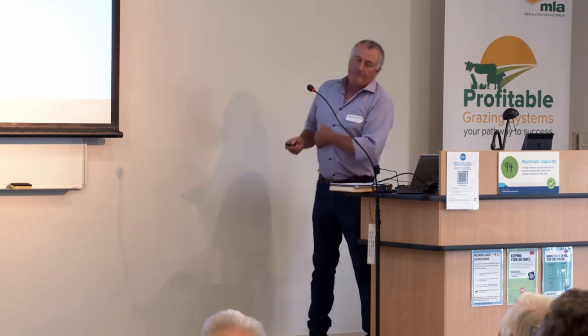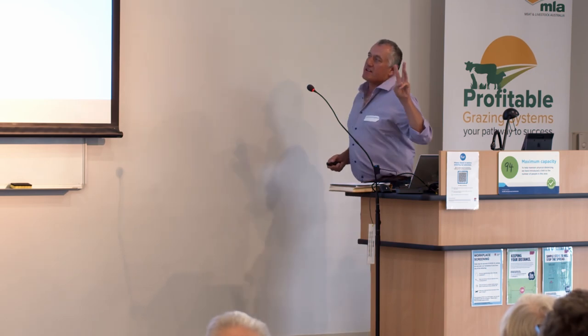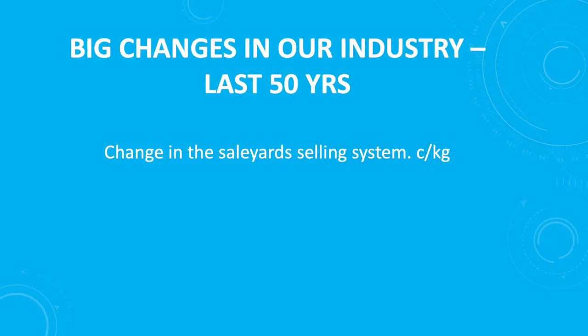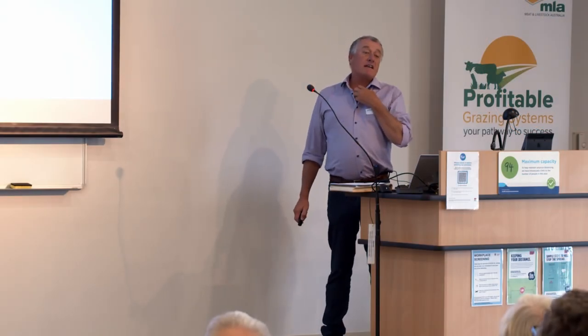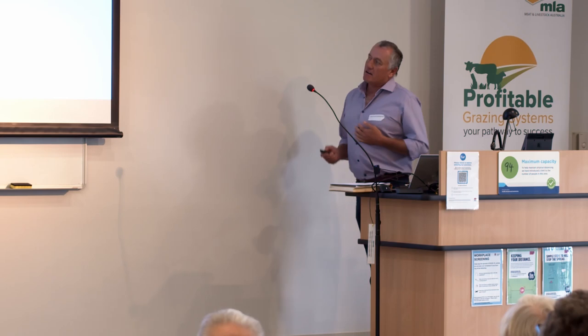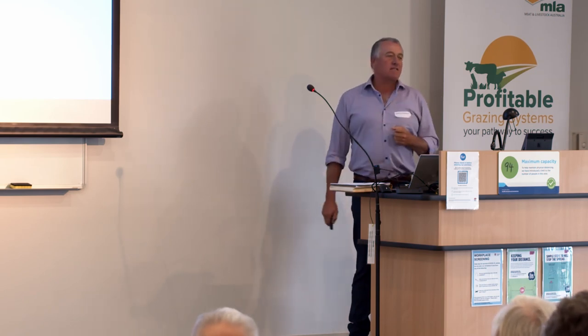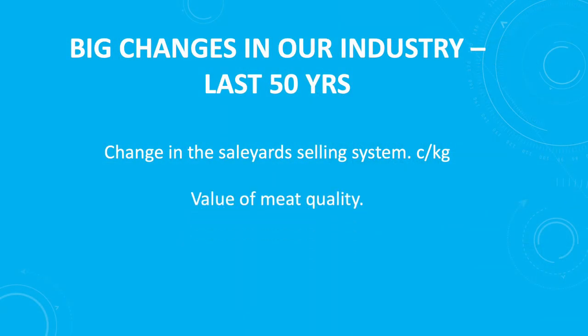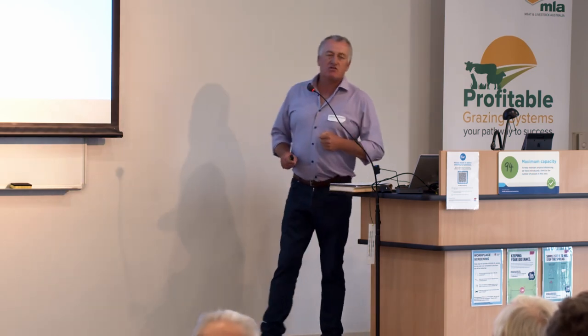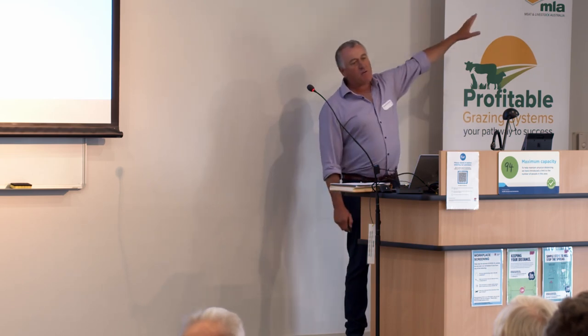I wanted to talk about three major things I've seen happen in the industry over the last 50 years. The first was when they changed the sale yard system from a per-head basis to a cents-per-kilogram basis — that's when data started in our industry in a really strong way, because you had to weigh it to sell it. That drove us to start looking at production and efficiencies. The next was the value of meat quality — the ground-breaking work from MLA and the ag department, coming from a massive research project based on data.